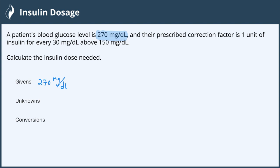Now, we're also told that we have a prescribed correction factor of one unit of insulin for every 30 milligrams per deciliter above 150 milligrams per deciliter.